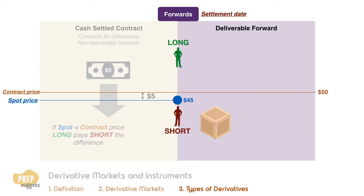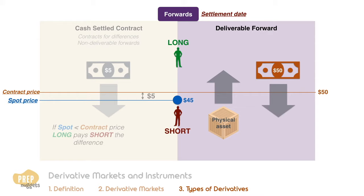Another form of settlement is known as a deliverable forward. In this case, the short is required to deliver the underlying asset to the long, and the long pays for it at the settlement price. Note that the price paid for the asset is the contract price, not the spot price. The spot price has no bearing in this arrangement. So if the spot price is lower than the contract price at settlement date, the long is disadvantaged because it is paying a higher price than the market price for the asset.